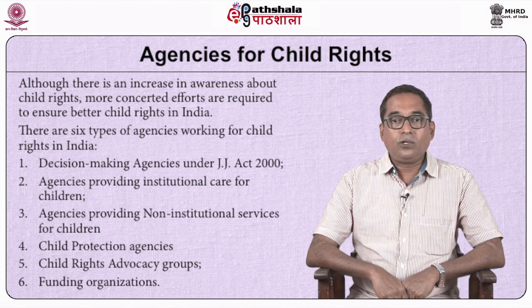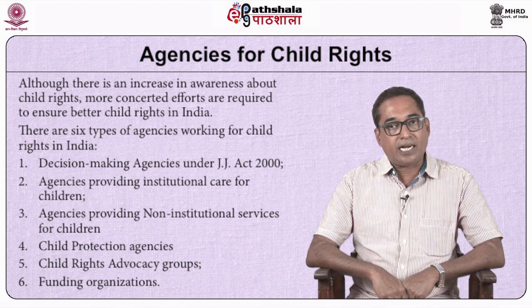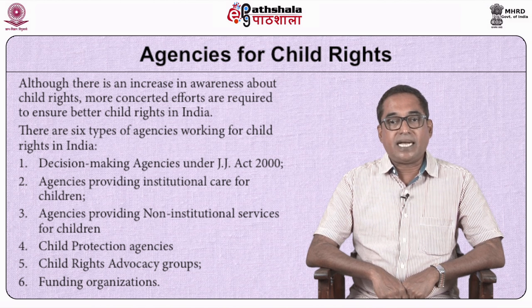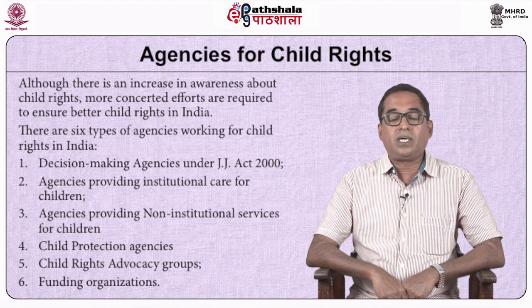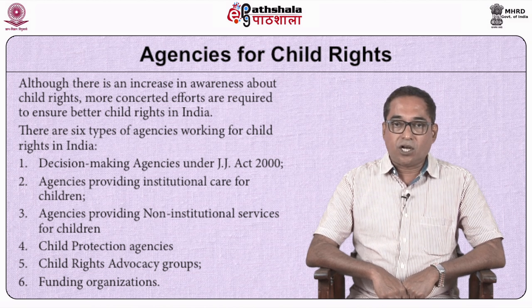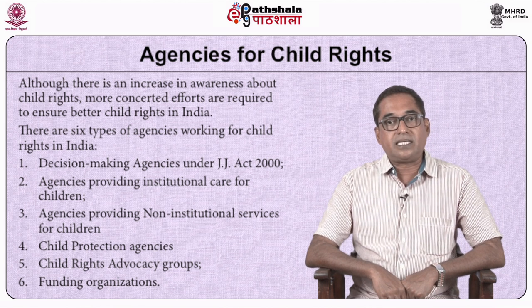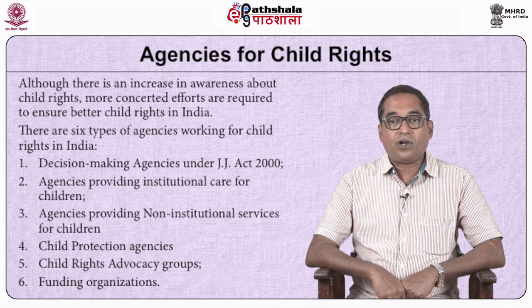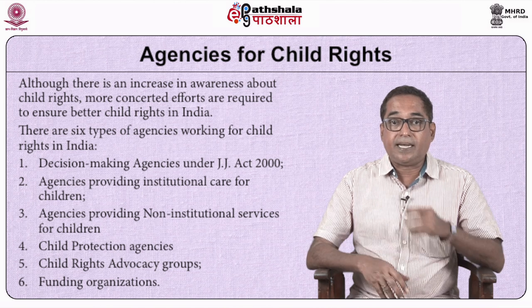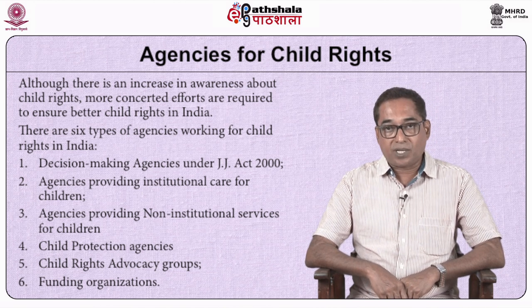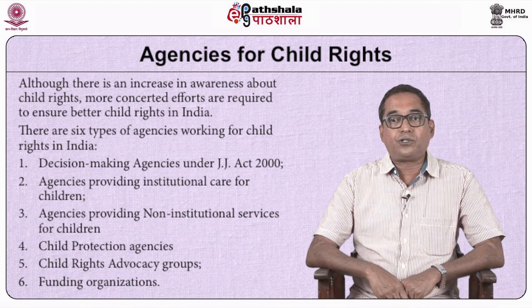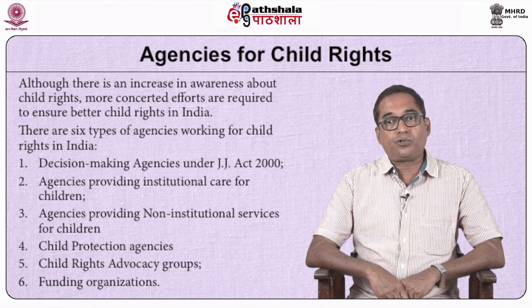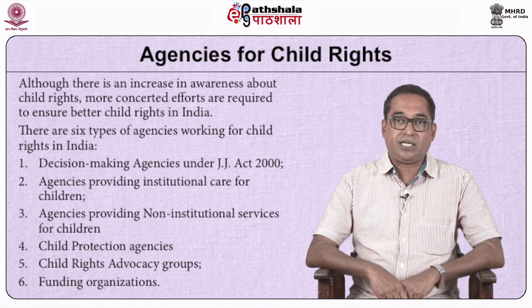Agencies for child rights. Although there is an increase in awareness about child rights, more concerted efforts are required to ensure better child rights in India. An obstacle in realizing the rights of the child is the debt burden facing third world countries like India. Both government and voluntary agencies are working for child rights. There are six types of agencies: decision-making agencies under the JJ Act 2000, agencies providing institutional care, agencies providing non-institutional services, child protection agencies, child rights advocacy groups, and funding organizations.